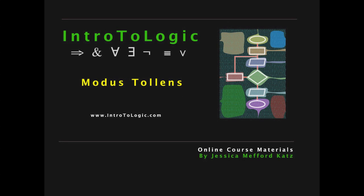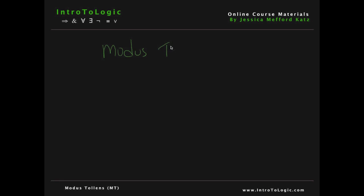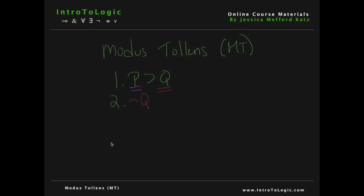Welcome to Intro to Logic. In this video, we'll go over the rule of inference called modus tollens. Modus tollens is abbreviated with the letters MT. In its simplest form, modus tollens entails that if we have a conditional and the negation of the consequent of that conditional — which in this case would be not Q since our consequent is Q — we can then derive the negation of the antecedent. Since our antecedent is P in line 1, we can therefore derive not P.